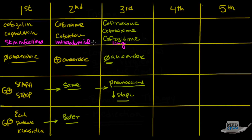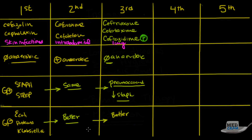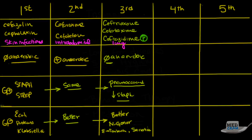Specifically, ceftazidime covers pseudomonas, and that's an important point. As we go up through the generations, gram-negative coverage just keeps getting better. With ceftazidime you can cover pseudomonas, but even without it, third generation offers good coverage of Neisseria gonorrhea, Enterobacter, and Serratia. If you use ceftazidime, it will cover pseudomonas — a big one, since pseudomonas is the infection people get in nursing homes, specifically in the lung.